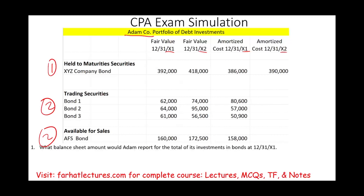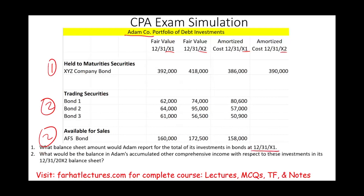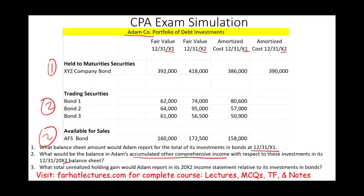I'm going to ask you three specific questions. Those are: what balance sheet amount would Adam report for the total investments in bonds for year X1? What would Adam's accumulated other comprehensive income be in year X2? And third, what total unrealized holding gain would Adam report in the X2 income statement? Notice those questions are considered a simulation, where I would ask you to input the answer in a box. Also, I can ask the same questions with four multiple choice options — any simulation can be turned into a multiple choice, or vice versa.